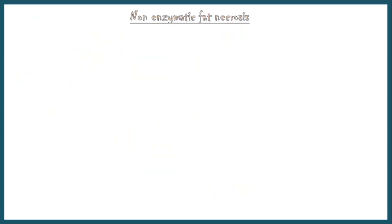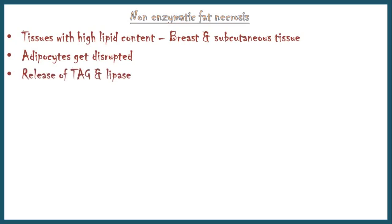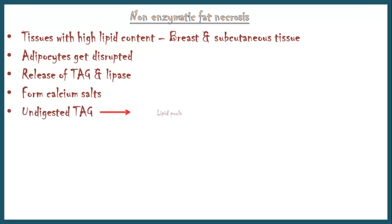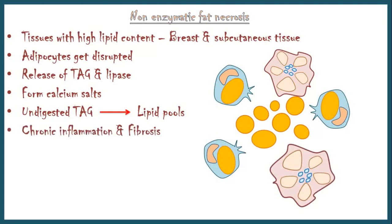Non-enzymatic fat necrosis is commonly seen in tissues with high lipid content, such as breast and subcutaneous tissues. Adipocytes get disrupted due to trauma, and triglycerides and lipase are released. Similar to enzymatic fat necrosis, triglycerides get digested into free fatty acids and eventually get deposited as chalky calcium salts. Undigested triglycerides may form lipid pools, usually surrounded by numerous foamy macrophages and Touton's giant cells. This will eventually lead to a chronic inflammatory reaction and gradual fibrous tissue formation. When chronic inflammation is associated with lipid-laden macrophage collections, it is called xanthogranulomatous inflammation.